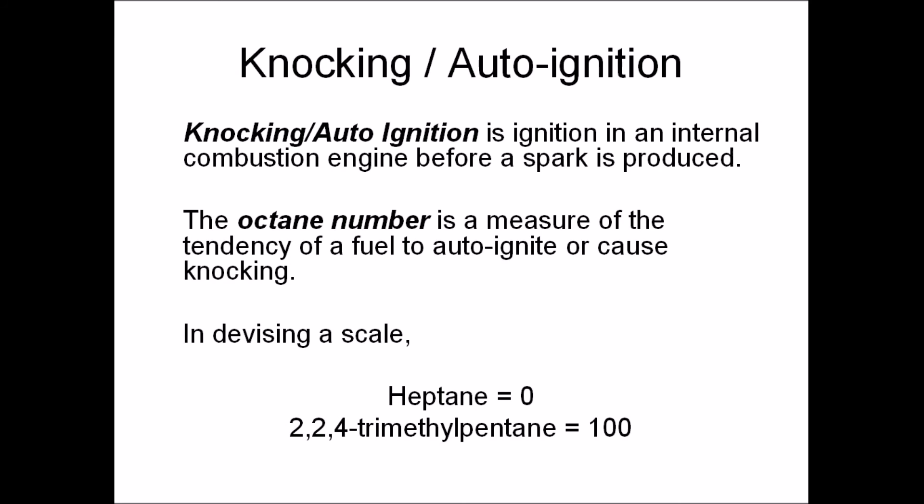For an engine to work you need a spark at regular intervals. If you get a spark before the desired moment you get a detonation sound — this is called knocking. The octane number of a fuel describes its tendency to cause knocking. When the scale was being made, heptane and 2,2,4-trimethylpentane were chosen as references: heptane equals zero and 2,2,4-trimethylpentane equals 100.